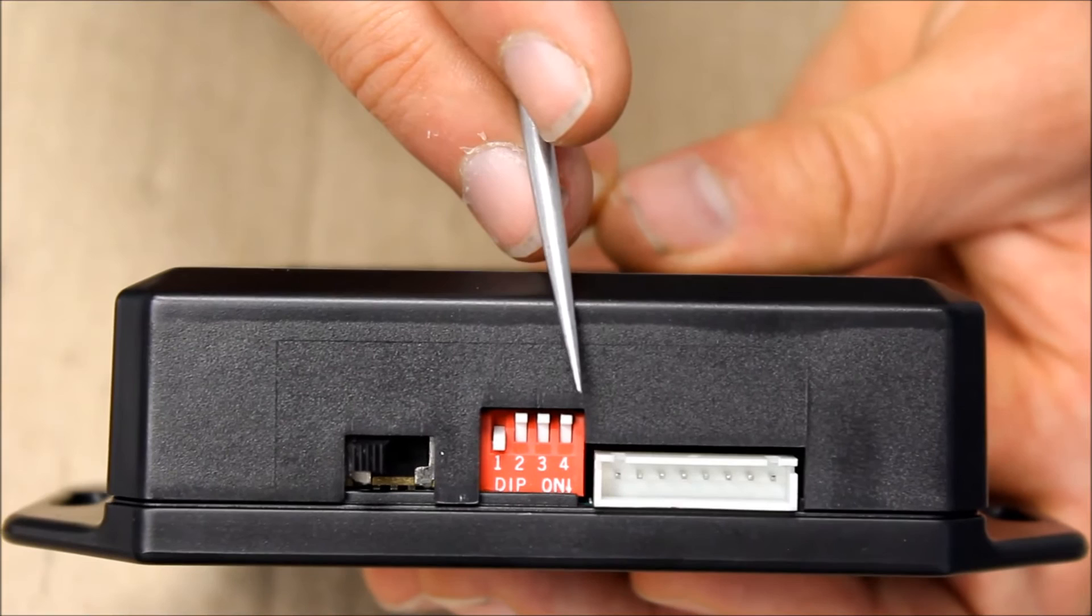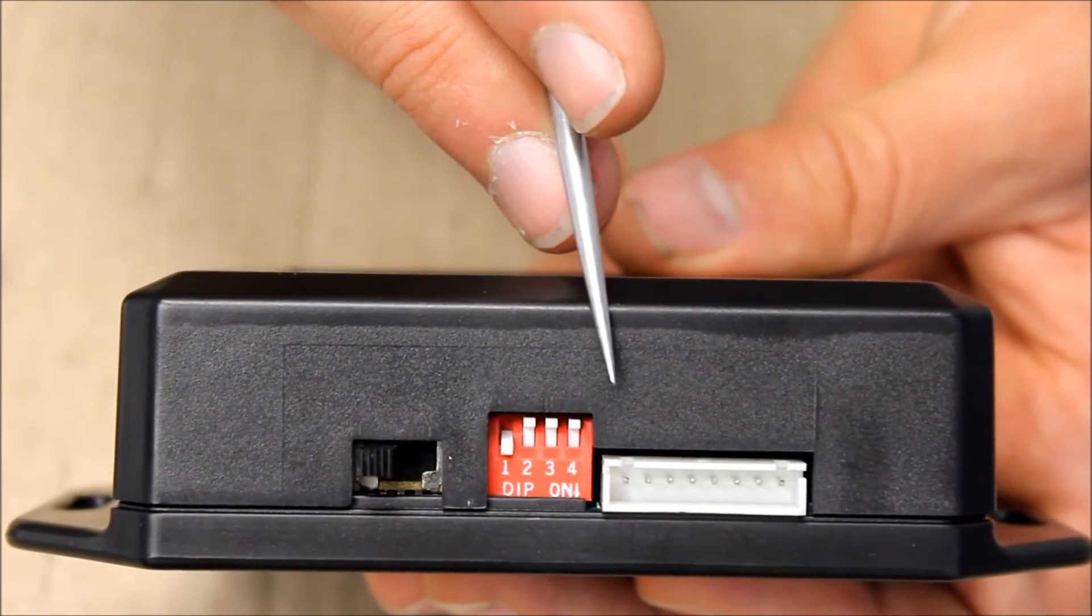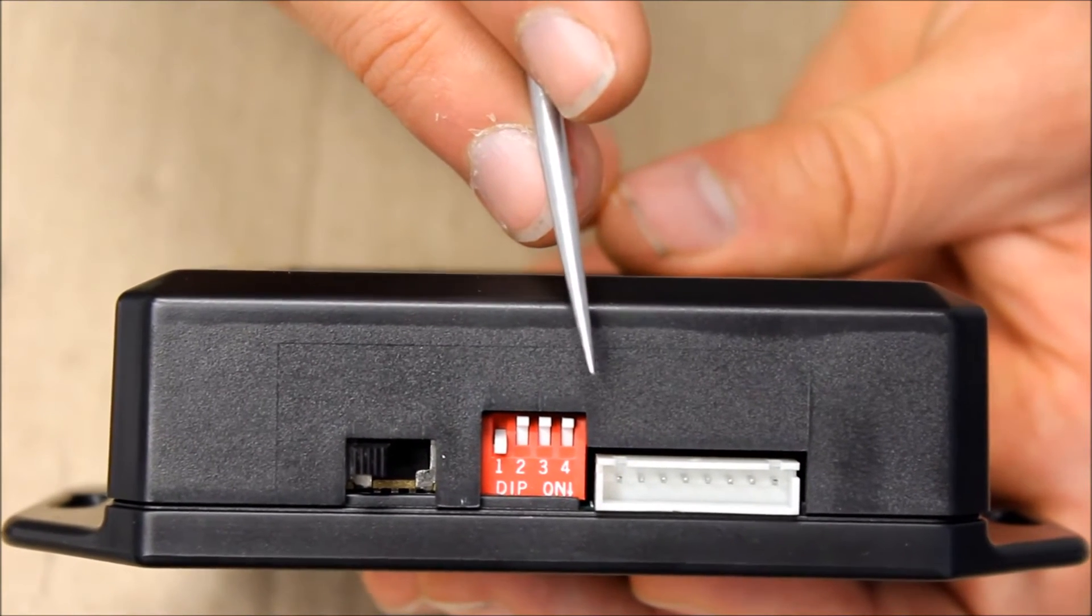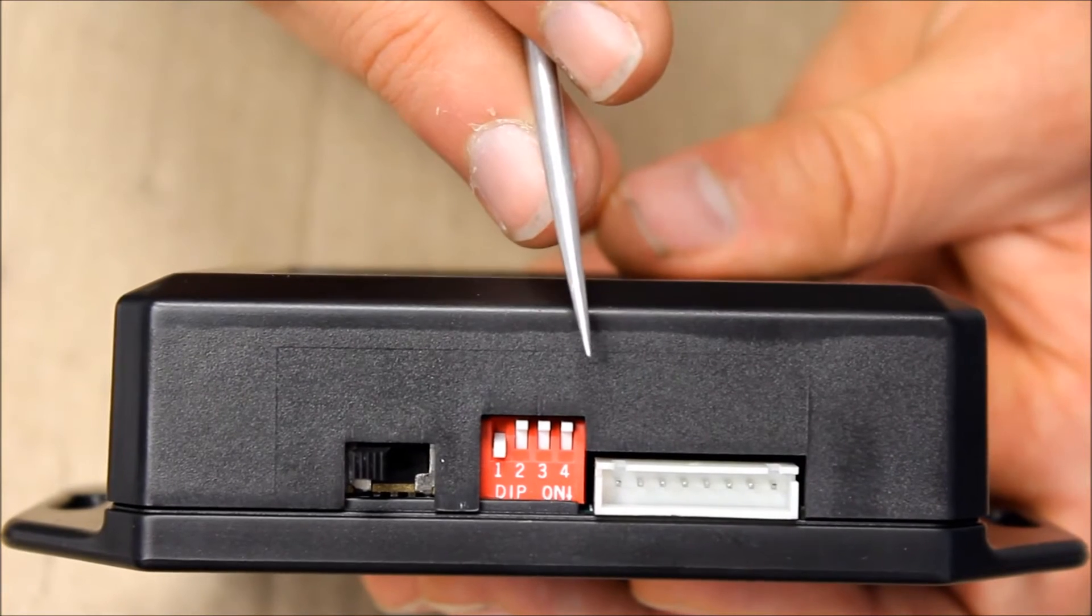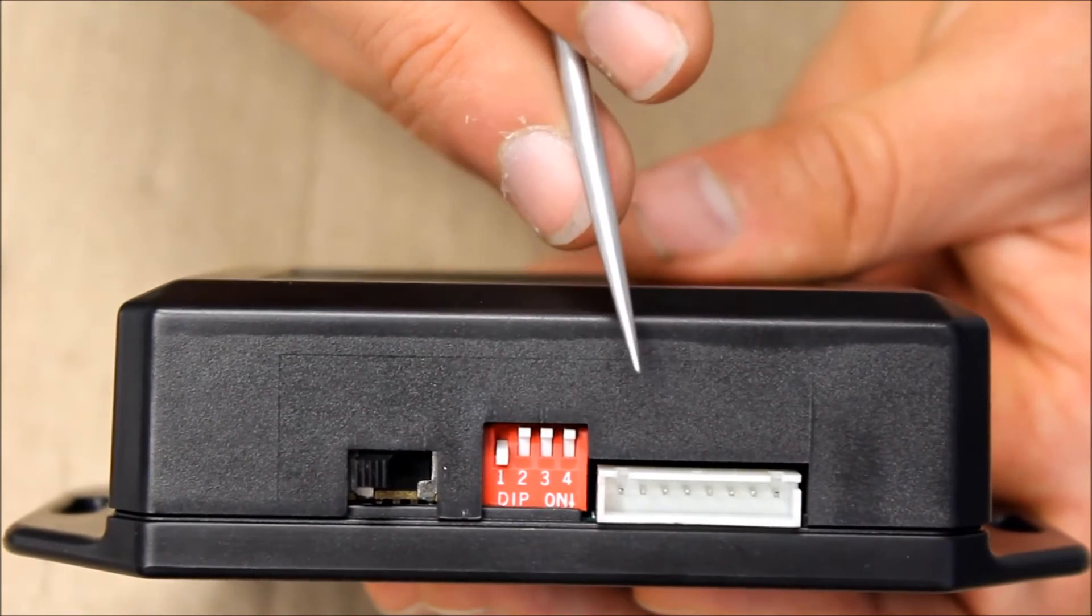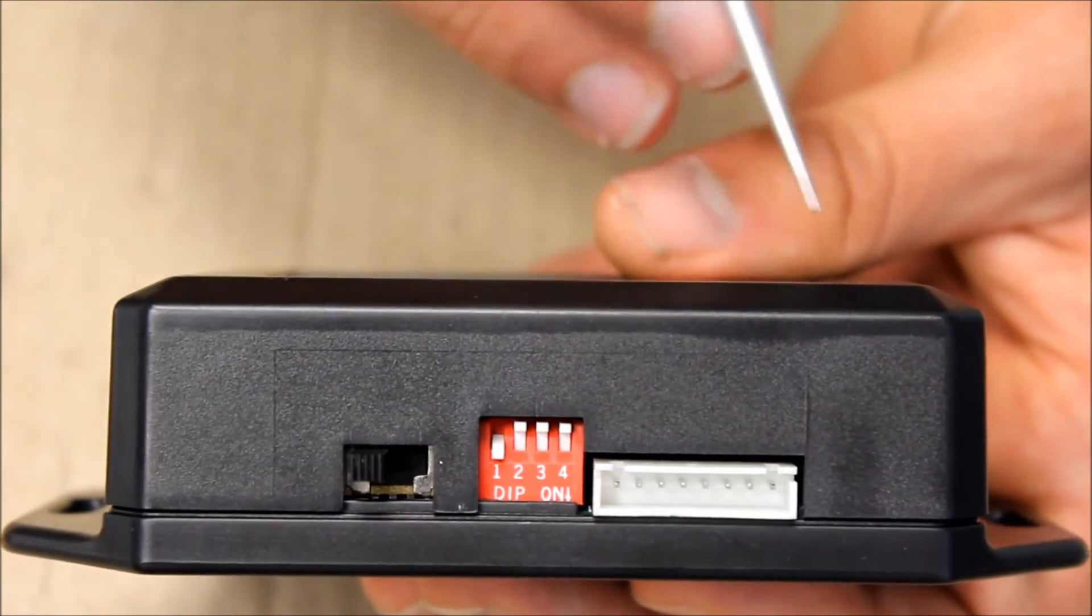The last switch is used to control retraction safety. This makes it so that the PA39 is monitoring the retraction speed of the actuators. If one actuator gets stuck, the PA39 will sense that it has stopped moving and stop both actuators to ensure safety. Turning the switch on enables this feature, turning it off disables it.